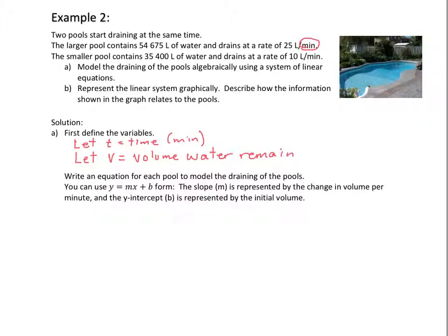Then, we're going to look at writing our equations using those variables. Using the y equals mx plus b form again, slope is going to represent this time the change in volume per minute, and the y-intercept is the initial volume. So, slope is always the change or the rate of change in the question, and the y-intercept will always be the initial or starting point.